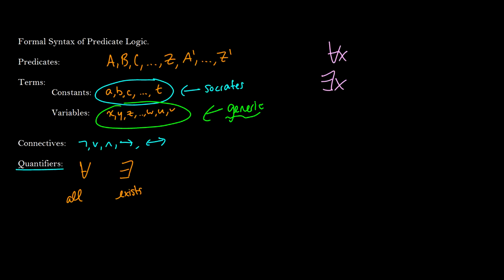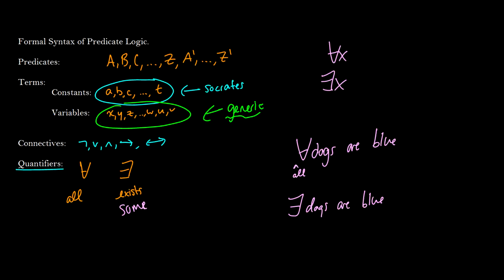As a rough illustration: to say 'all dogs are blue,' we use the upside-down A for 'all dogs are blue.' To say 'some dogs are blue,' we use the backwards E. This is just to understand the new notation and what it means as an example — the formal correct logic comes next.